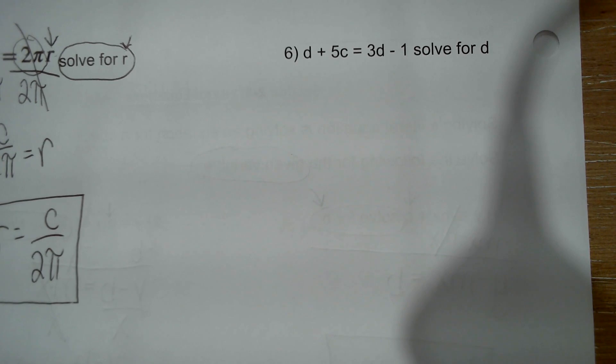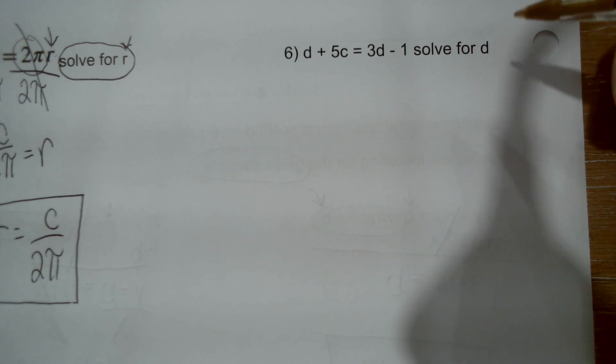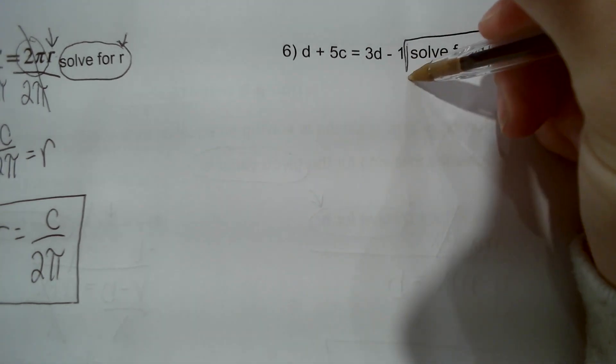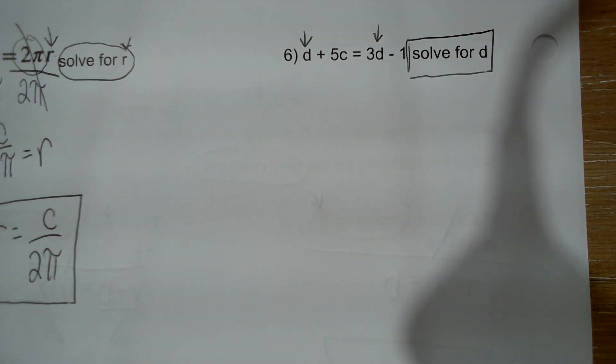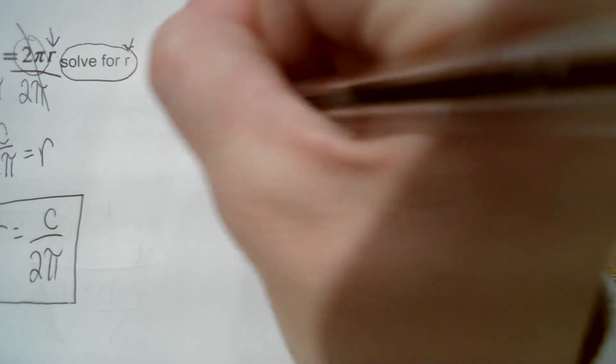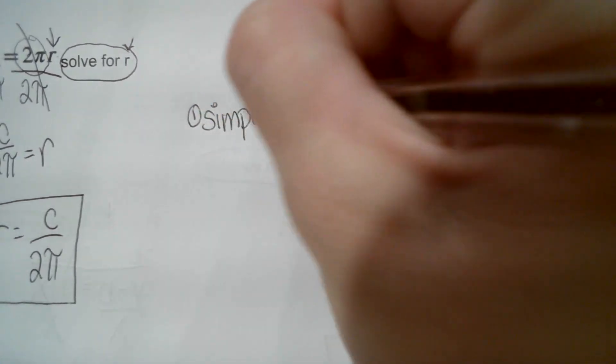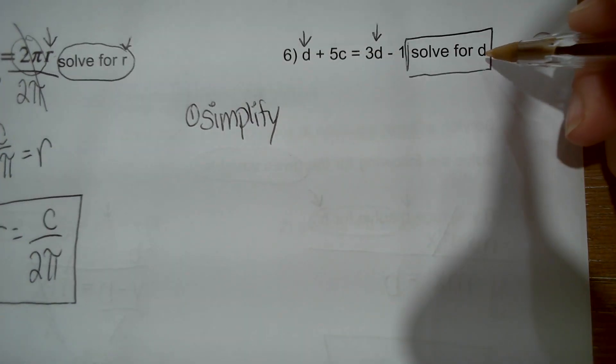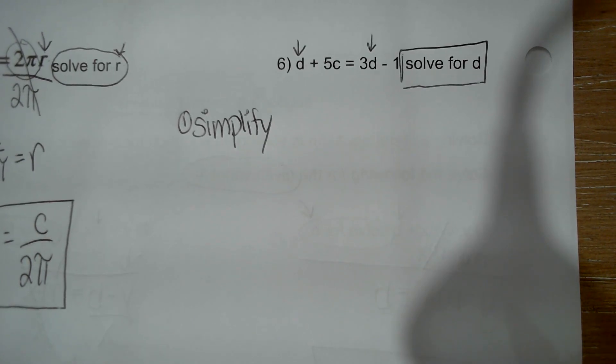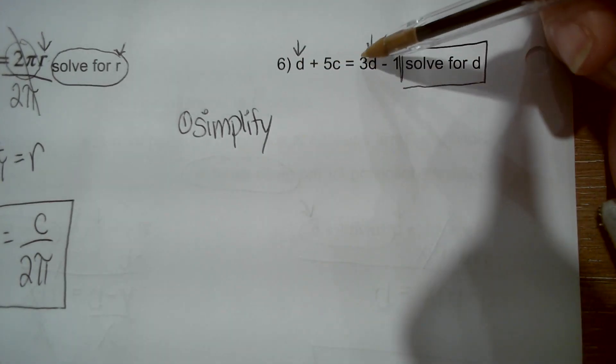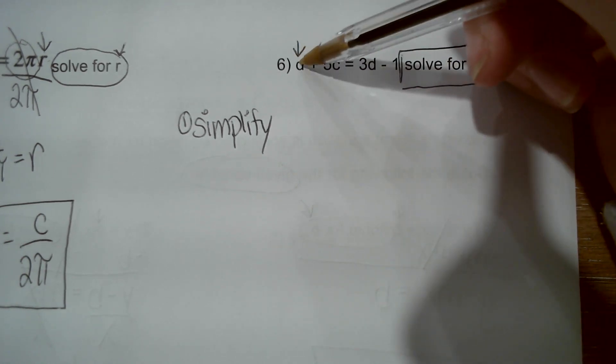All right, next one. I want you to try this one on your own. Try it. Pause the video. Try it on your own, and then we'll go over it once you press play again. All right. So in this situation we are solving for D. The only difference is we have D on two sides. So first thing we want to do: simplify our equation. If I'm trying to isolate the D, I need to get them all together first. So that's my first step. And I'm going to look and see, well, if I subtracted 3D, I'd end up with a negative D over here. And then I'd have an extra step to do because I'd have to get rid of the negative. So instead I'm going to subtract D from both sides.